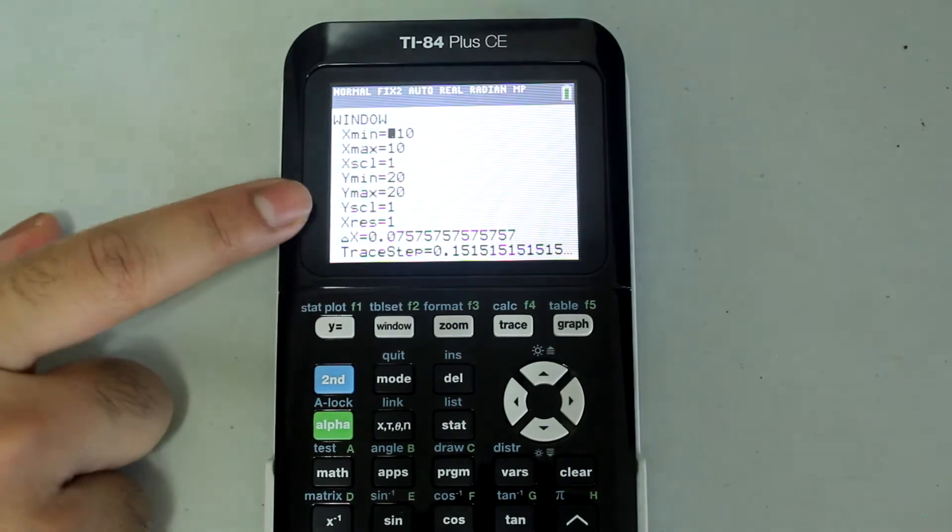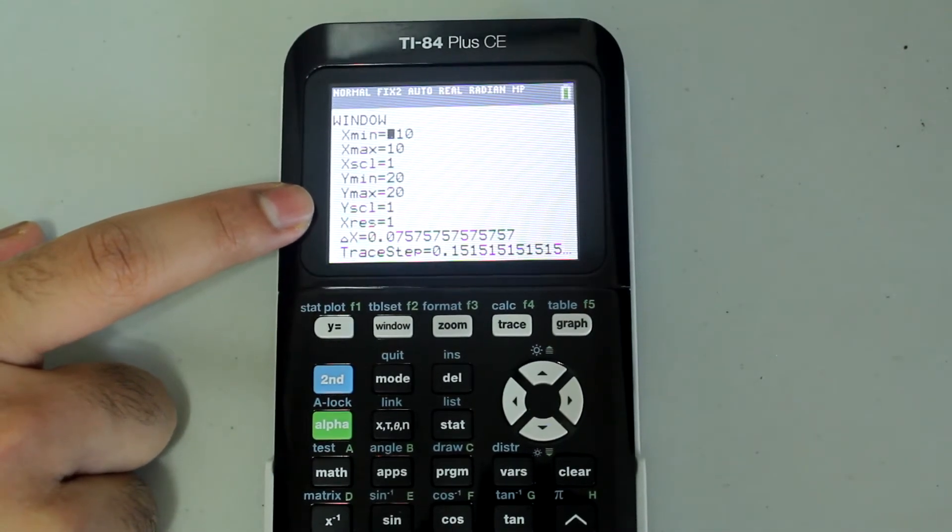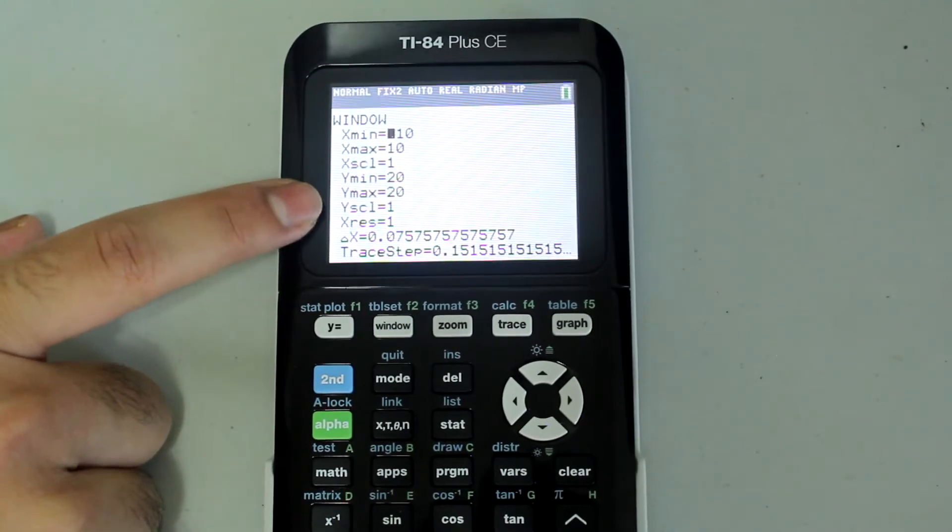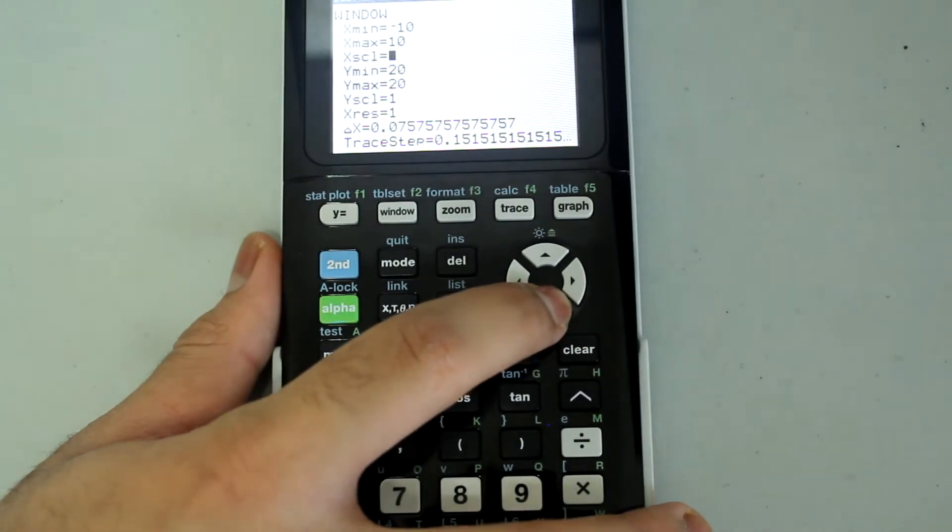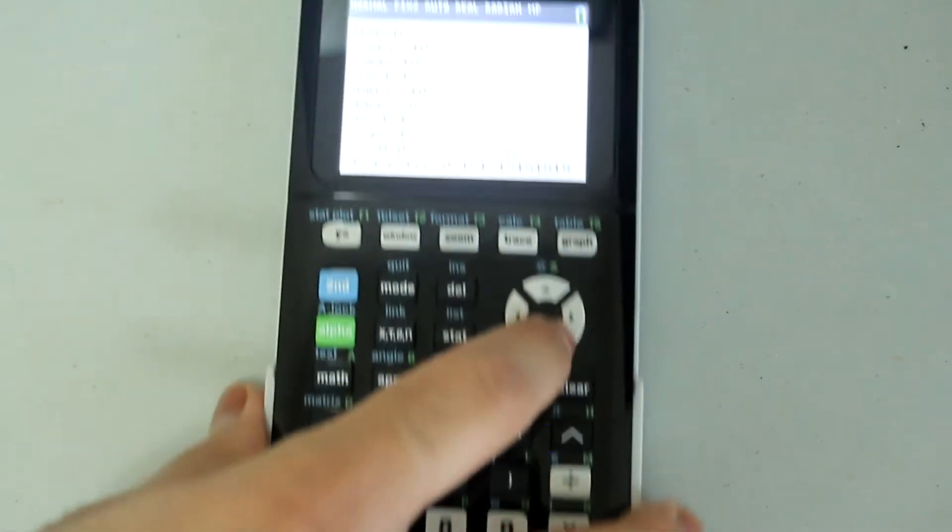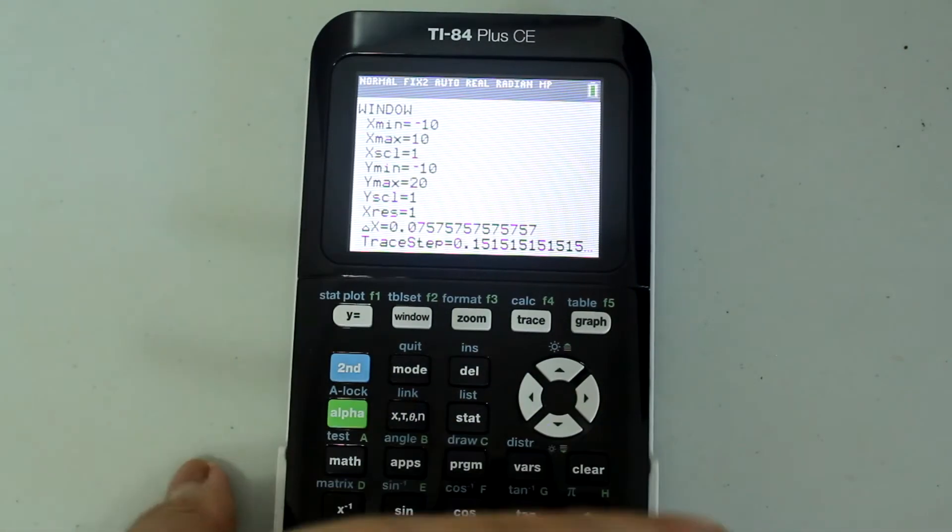And if we go to window, we need to make the min and max values different, and the min value has to be less than the max value. So I'm going to make the y min negative 10 once again. And I'm going to arrow down, and I'm going to make the y max positive 10.